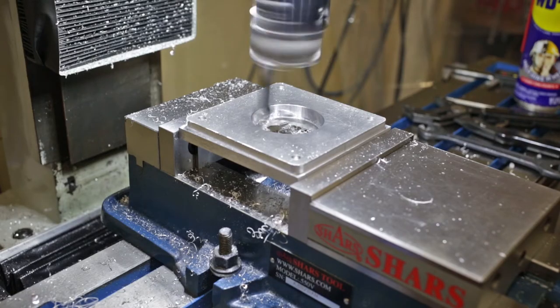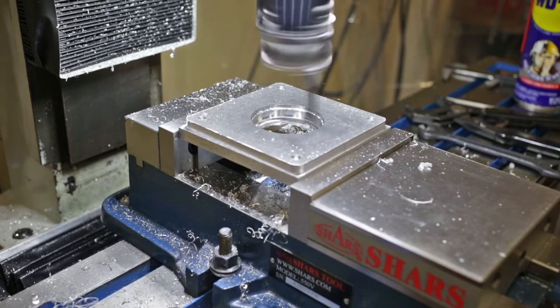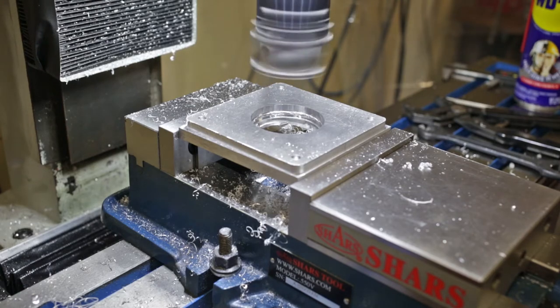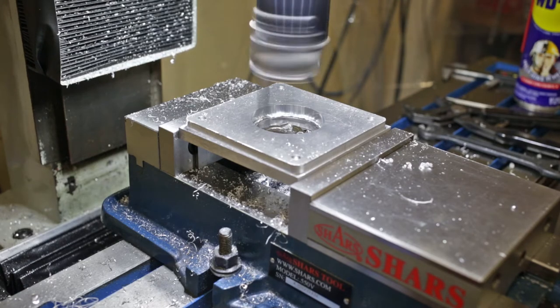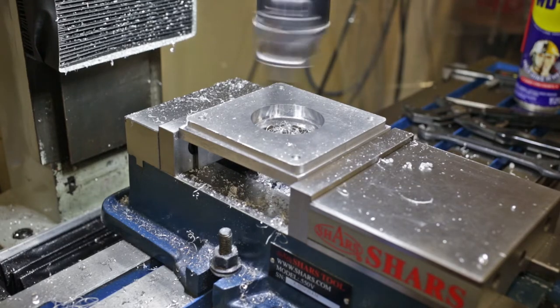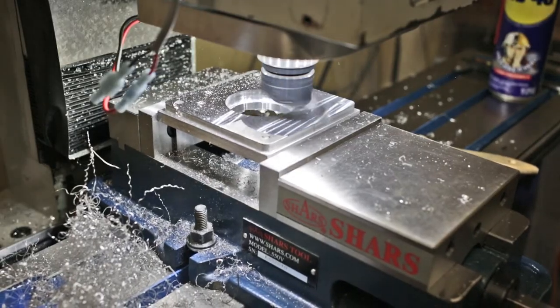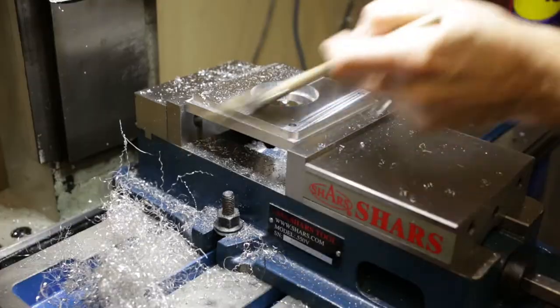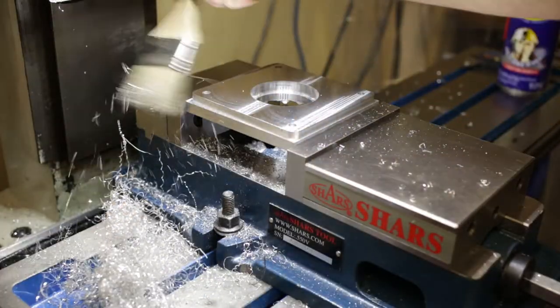The last thing I needed to do on the top of the plate was to open up the bore with a boring bar and boring head. It was about 10 thousandths off, so I just used this to open it up a little bit and give it a better, smoother bore for the bearing. After that, I just used a face mill to face off the top of the plate, and then we'll move on to the back side.